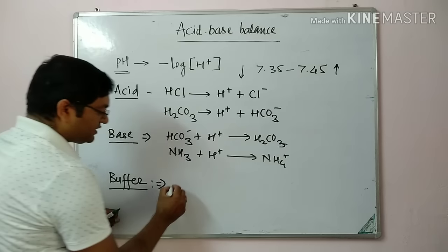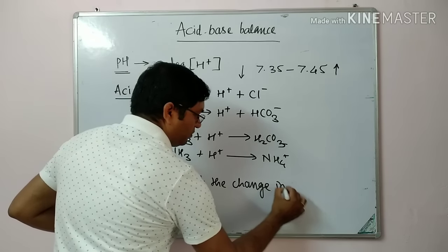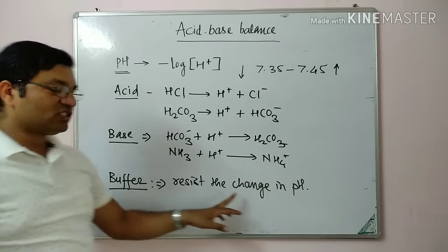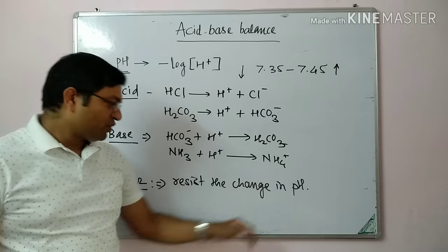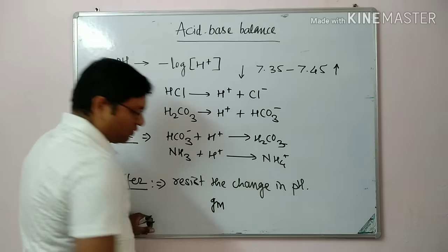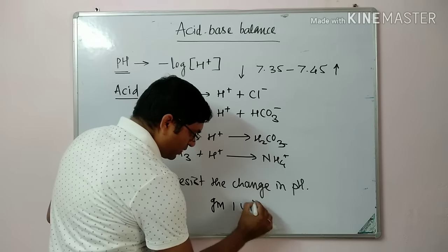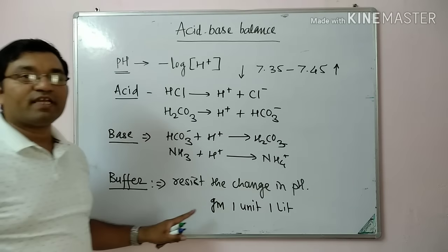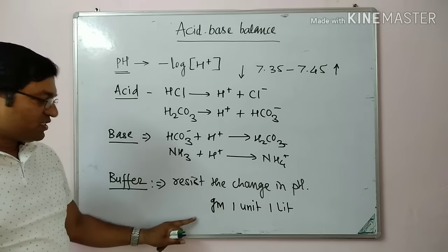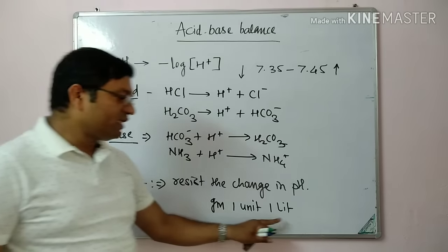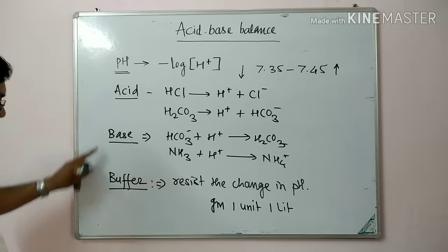Buffers are solutions which resist the change in pH. These are solutions of a weak acid and its strong base, or a weak base and a strong acid. The amount of acid or alkali required to change the pH by one unit of one liter of buffer solution is known as the buffering capacity of that buffer solution.